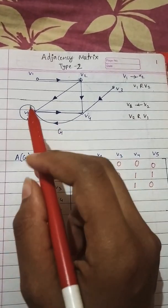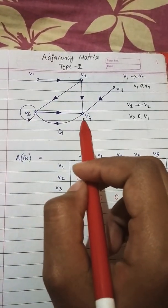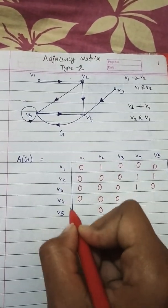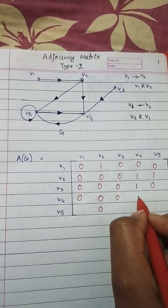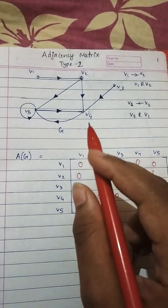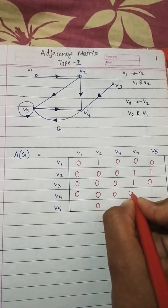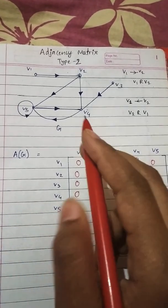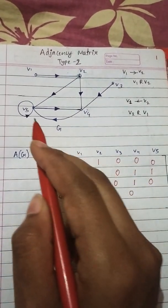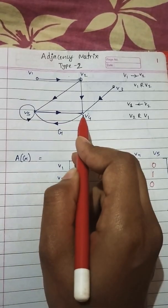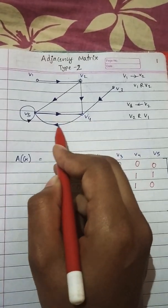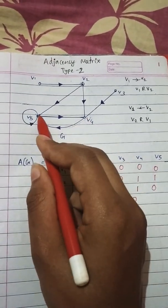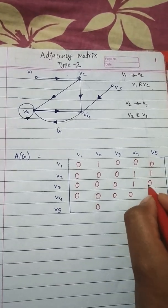V4 related to V1? No relation at all, 0. V4 related to V4? No circular relation, 0. V4 related to V5? Yes, by this arrow — V4 is related to V5, therefore 1.